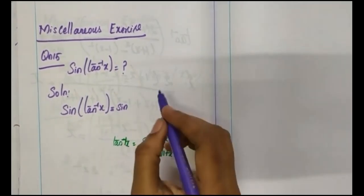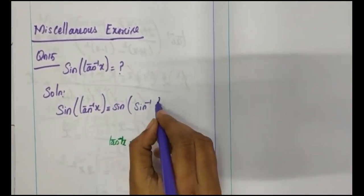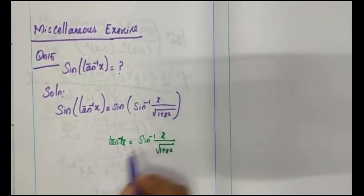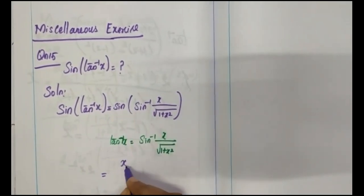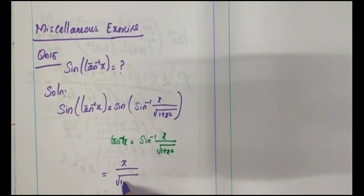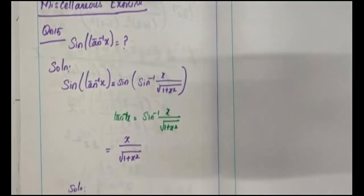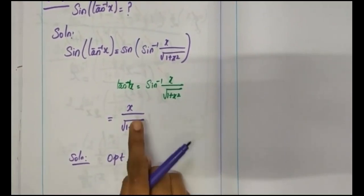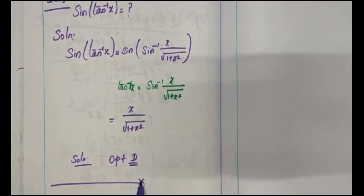Substituting, sine of tan inverse x becomes sine of sin inverse of x by root of 1 plus x squared, which equals x by root of 1 plus x squared. Looking at the options, this is option D. So the solution is option D: x divided by root of 1 plus x squared.